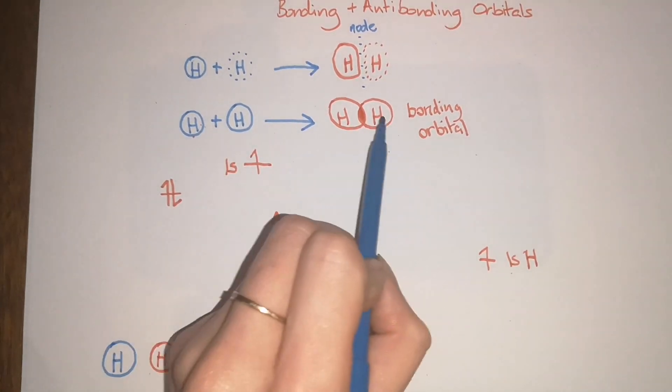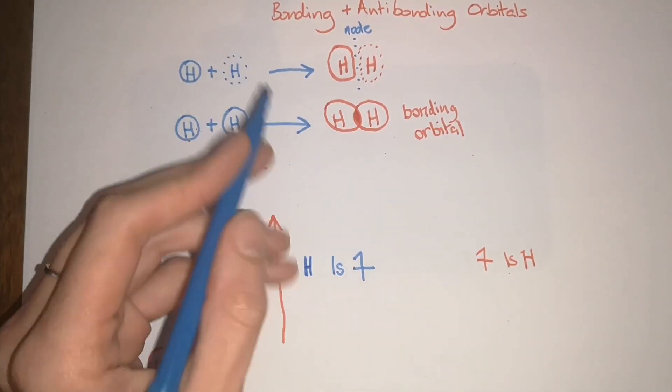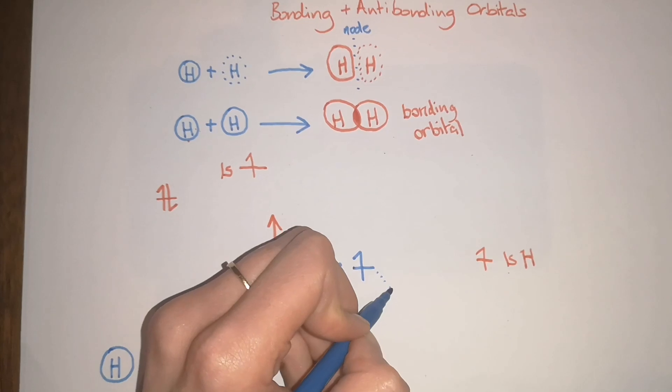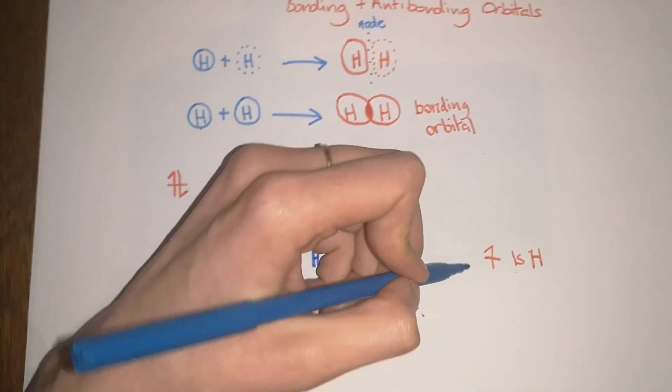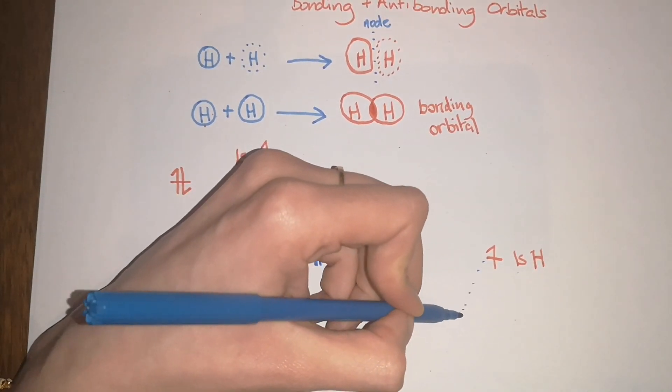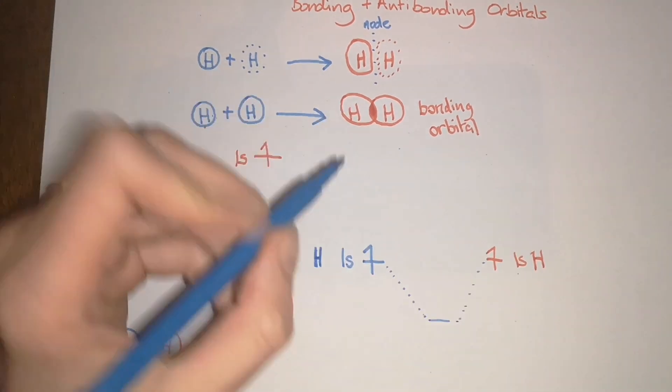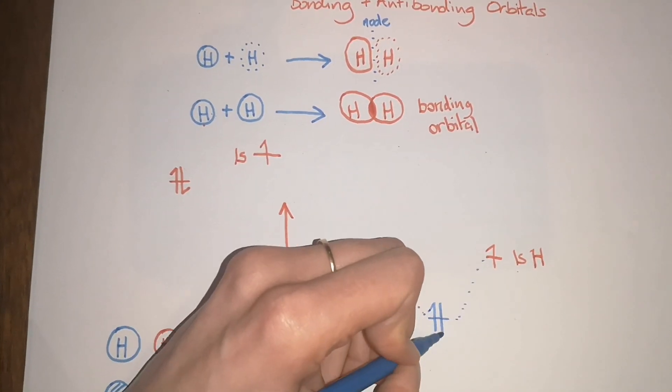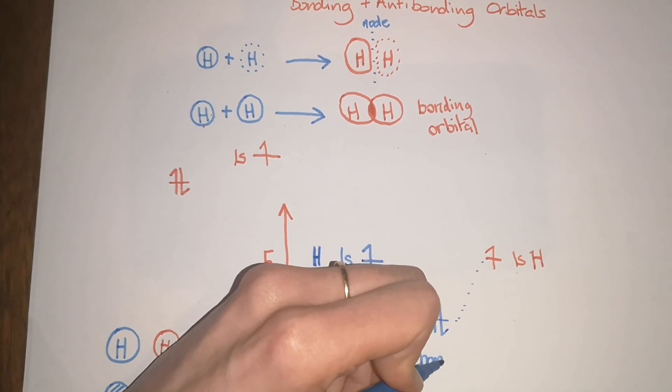In the case of the bonding orbital, which is depicted here, both orbitals will come together and combine to form a new orbital. Both electrons are going to join this together, and this is the bonding orbital.